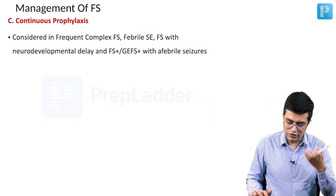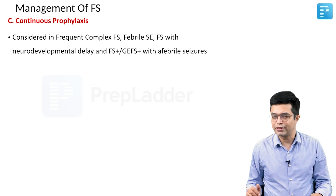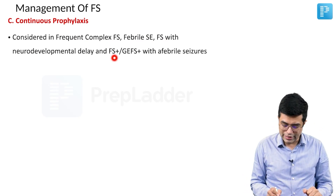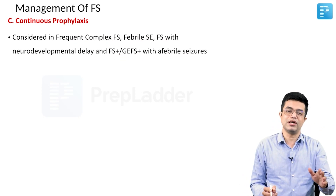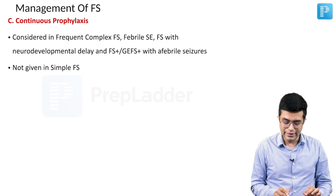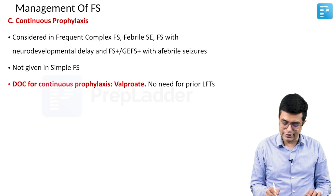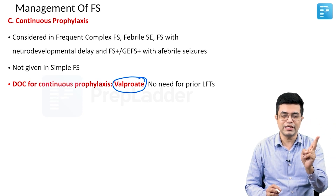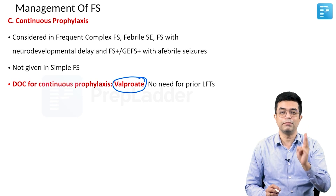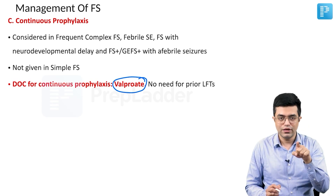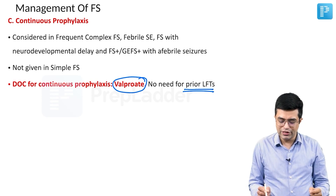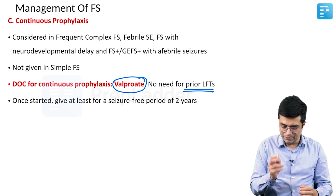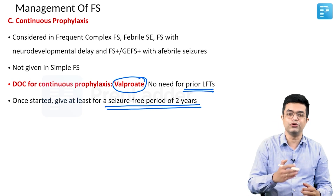Continuous prophylaxis uses anti-epileptic agents like valproate. It is considered in frequent complex febrile seizures, febrile status epilepticus, neurodevelopmental delay, or GEFS-plus or FS-plus with afebrile seizures. It is not given in simple febrile seizure. The drug of choice is valproate, and there is no need for prior LFTs before starting. Once started, it should be given for a seizure-free period of 2 years before tapering and stopping.